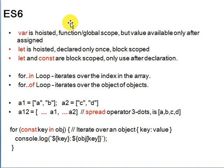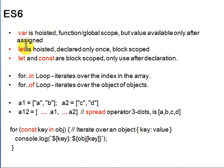Some important ES6 features: hoisting means variables are hoisted to function or global scope, but their values are only available after assignment. 'let' is hoisted, declared once, and is block-scoped (within curly braces). 'const' is also block-scoped and available after declaration. Always declare variables to define their scope, and use the smallest scope possible. Hoisting can be troublesome because a variable appears visible before it is declared.